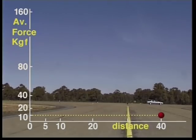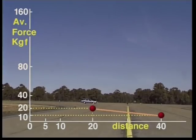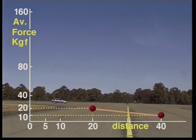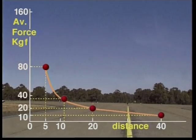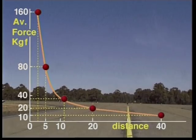Now let's stop in 20m, half the distance. The average stopping force is doubled to 20kg force. Now let's stop in half the distance again. The minimum distance you can stop in at this speed is 12m, and the average force is 33kg force. If a vehicle was stopped in 5m, the average force would be 80kg force. And if it was stopped in 2.5m, the average force would be 160kg force.